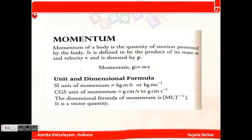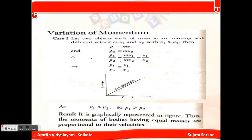p equals to mv. The SI unit of momentum is kg meter per second, and the CGS unit is gram centimeter per second. The dimensional formula of momentum is MLT to the power minus 1. Momentum is also a vector quantity.